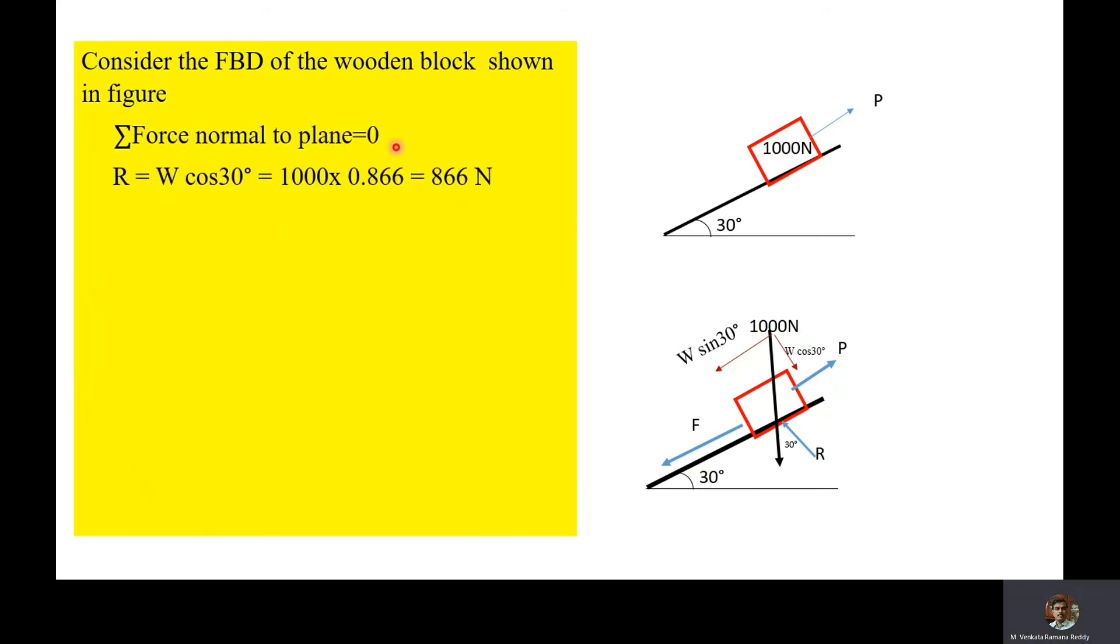Sum of forces normal to plane is equal to zero, then R is equal to W cos 30°, which is equal to 1000 × 0.866, which is equal to 866 newtons.